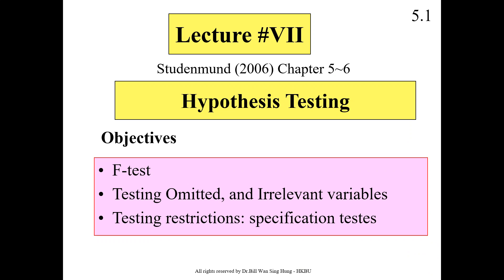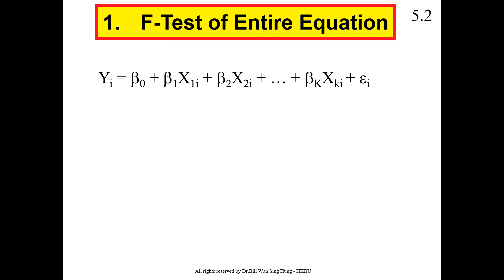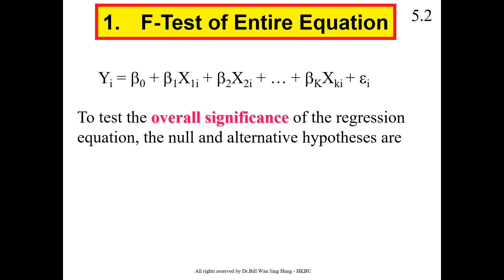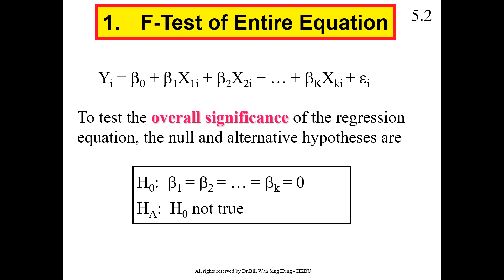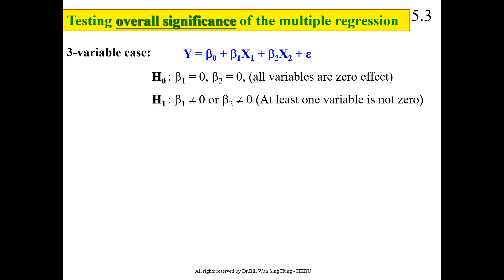Let me give you an example of a regression model having k explanatory variables. To test the overall significance of the regression equation, the null and alternative hypotheses can be written as follows. The null hypothesis is that all regression coefficients beta 1, beta 2, up to beta k are equal to zero. The alternative hypothesis is that at least one of these coefficients is not equal to zero.